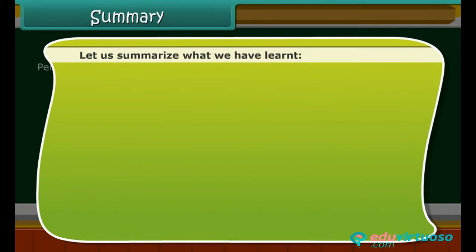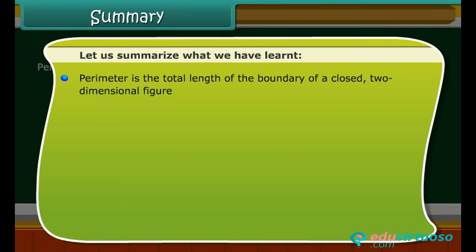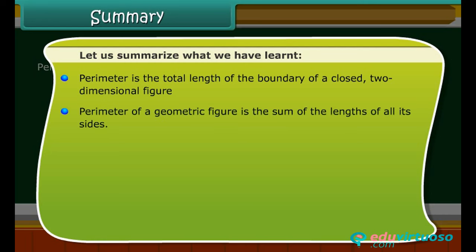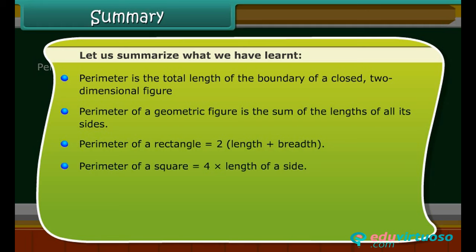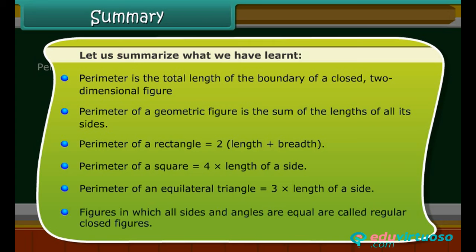Let us summarize what we have learned. Perimeter is the total length of the boundary of a closed two-dimensional figure. The perimeter of a geometric figure is the sum of the lengths of all sides. Perimeter of a rectangle = 2 × (length + breadth). Perimeter of a square = 4 × side. Perimeter of an equilateral triangle = 3 × side. Figures in which all sides and angles are equal are called regular closed figures.